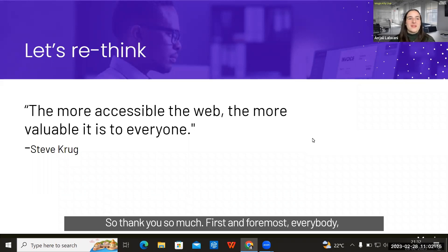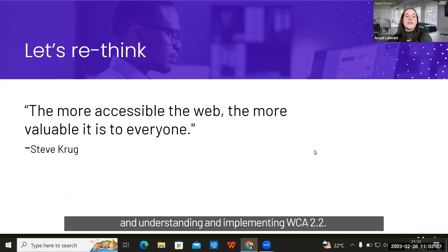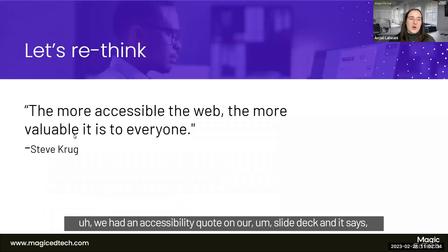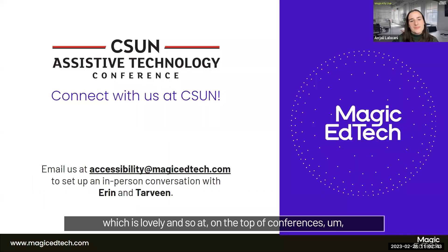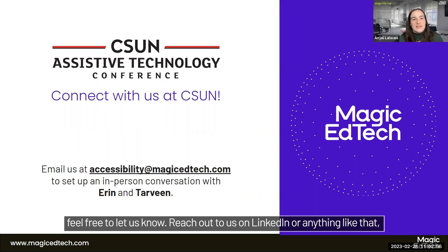Thank you so much for joining us for our fifth installment of Magically Live. Today we're going to be talking about breaking down barriers and understanding and implementing WCAG 2.2. We had an accessibility quote on our slide deck: 'The more accessible the web, the more valuable it is to everyone.' On the topic of conferences, Erin and Tarveen will be attending CSUN this spring — feel free to reach out on LinkedIn and we'd love to connect.